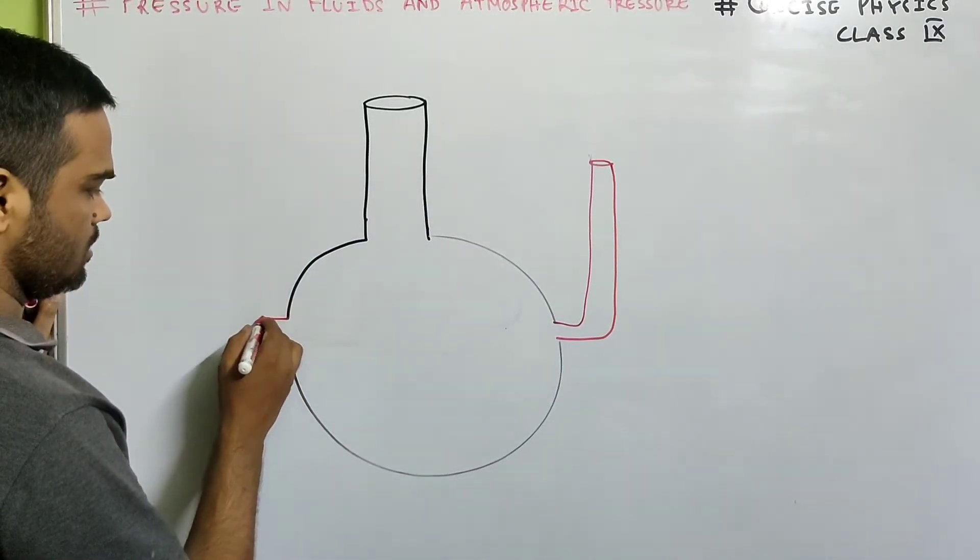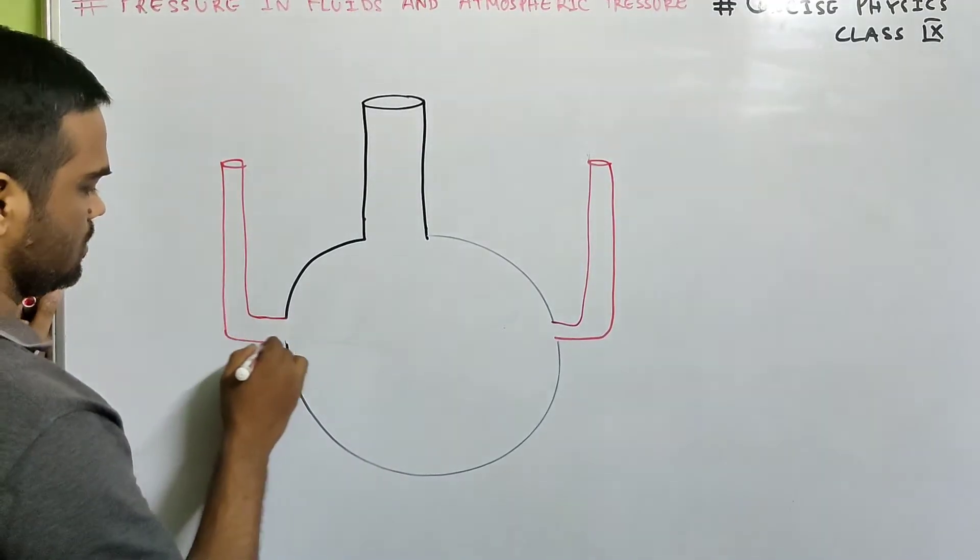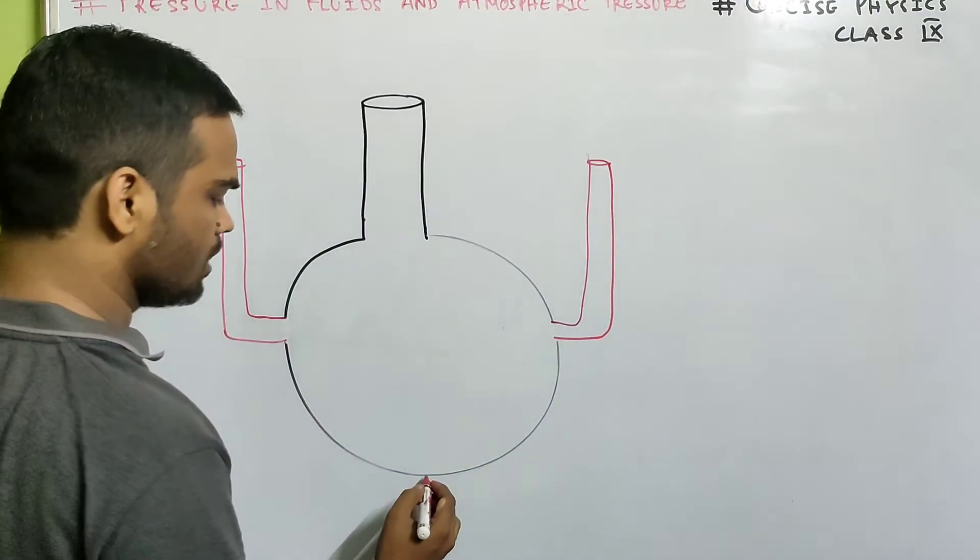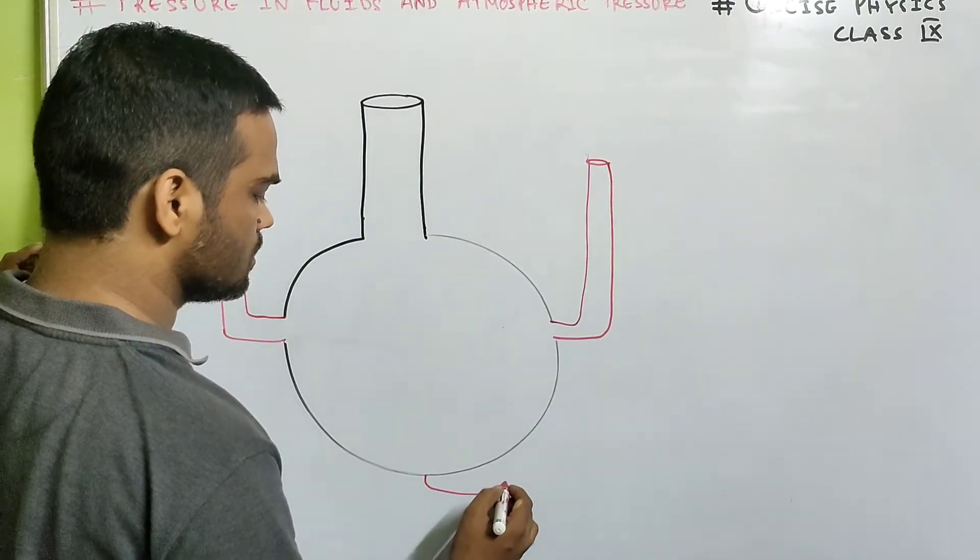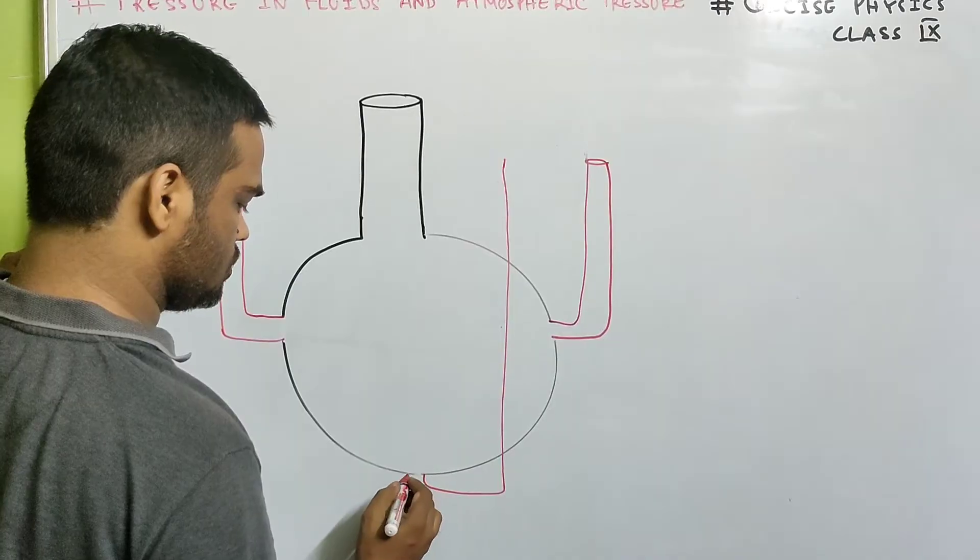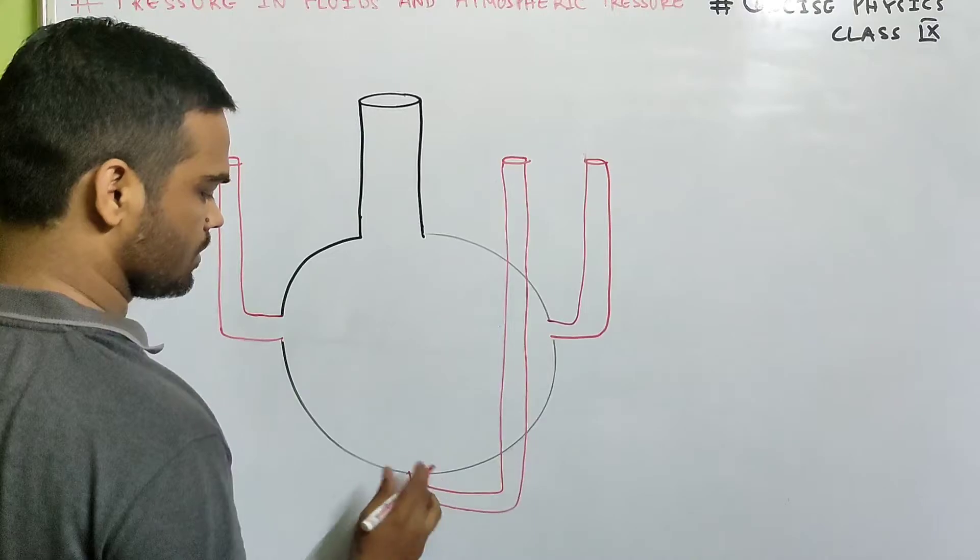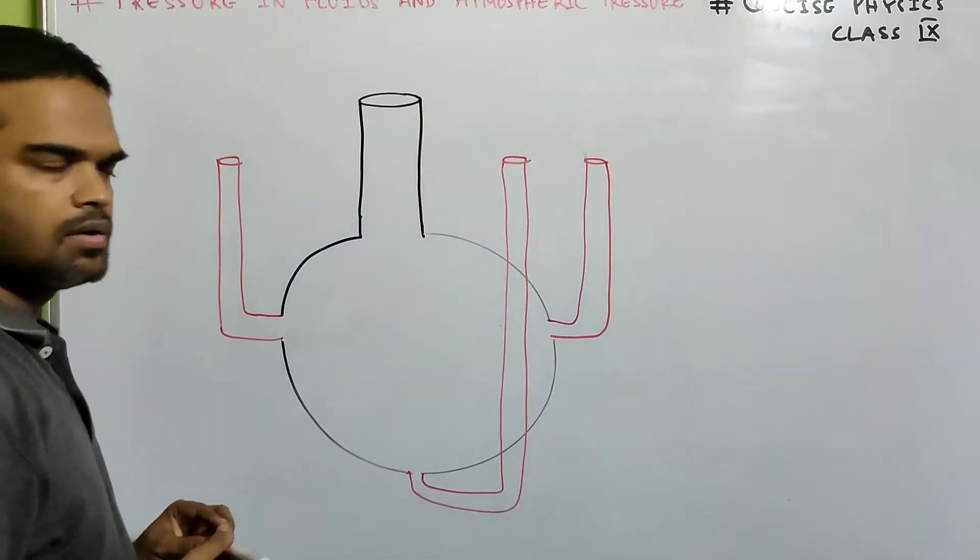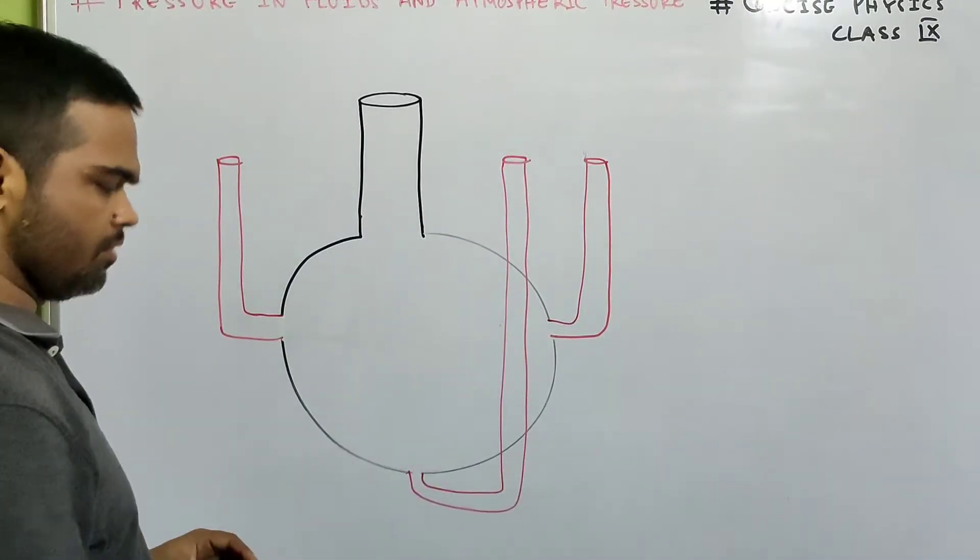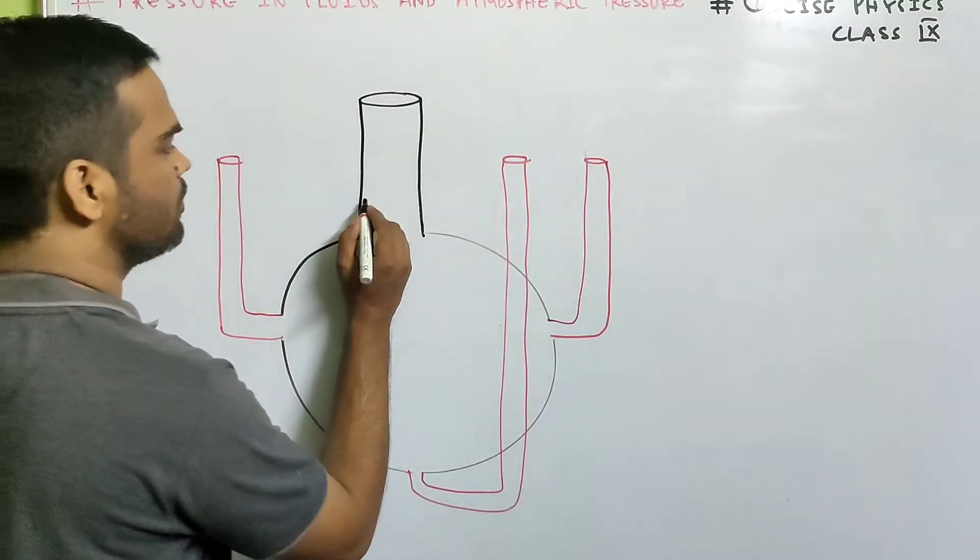Now we will place side tubes. At the bottom also, suppose there is a tube like this. Look carefully. At the side and at the bottom we have openings like this, a tube like this. Fill it with water.